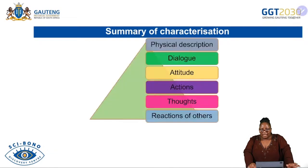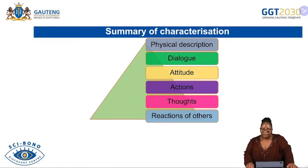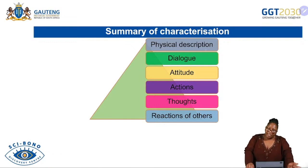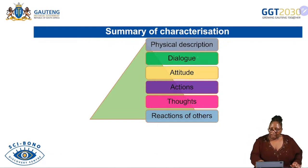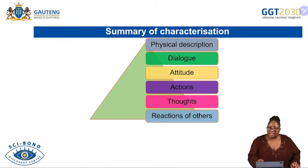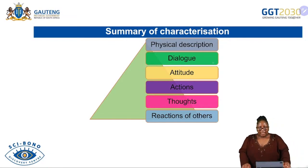Summary of characterization: how do we know characters? We know our characters through physical description, through dialogue — what they say — through their attitude, their actions, their thoughts, and the reactions of others.